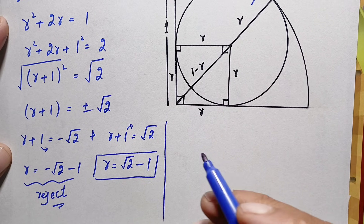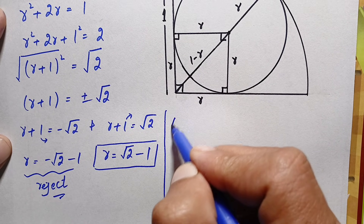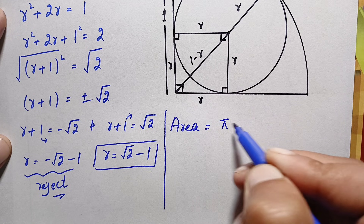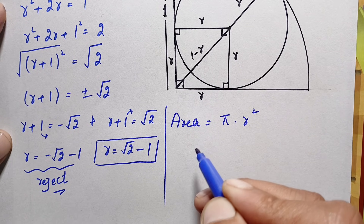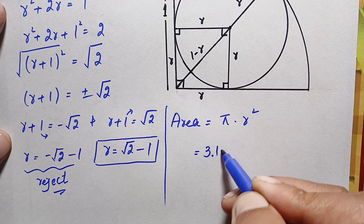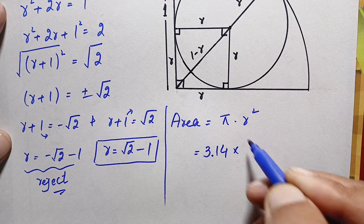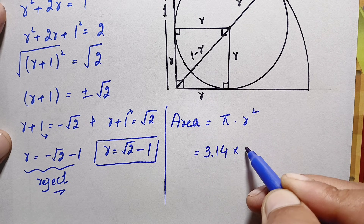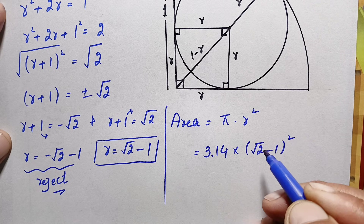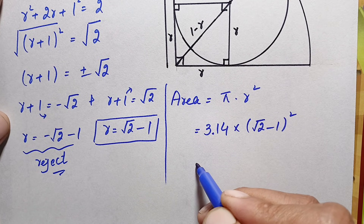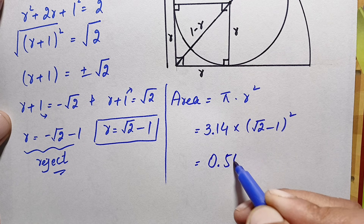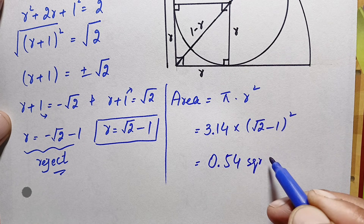Now we have the value of the radius of the smaller circle, so we can very easily find the area. The area of the circle is πr². The value of π to two decimal places is 3.1416, and the radius is (√2 − 1). Squaring and multiplying gives approximately 0.54 square units. That is our final answer.